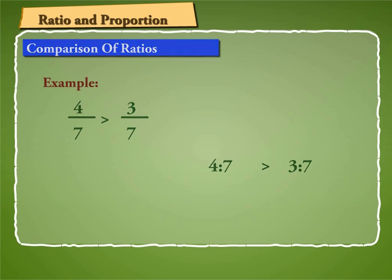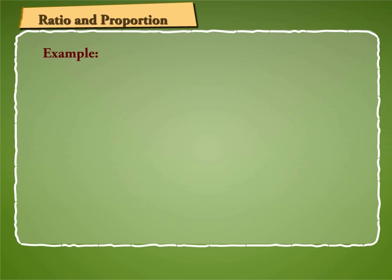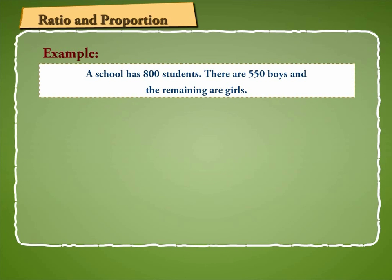Let us try to understand ratio with the help of an example. Suppose a school has 800 students. There are 550 boys and the remaining are girls.